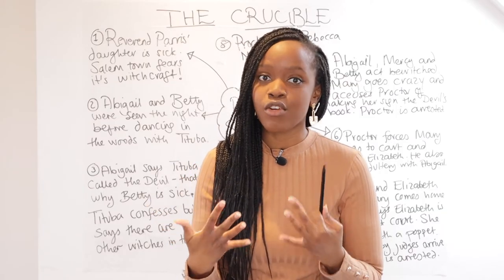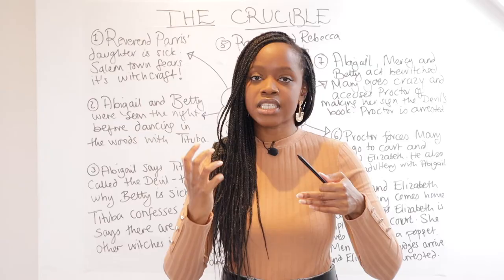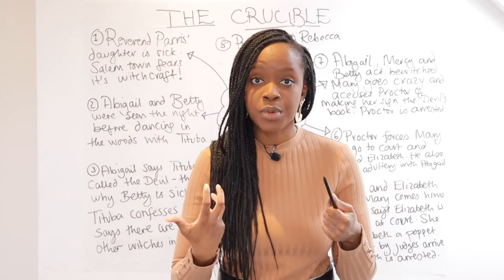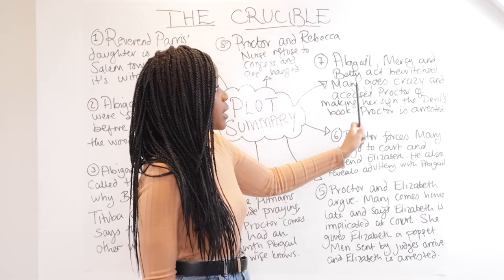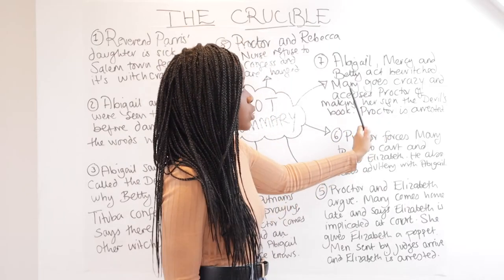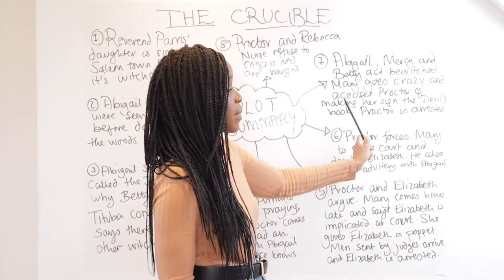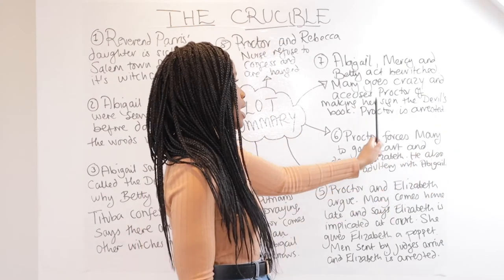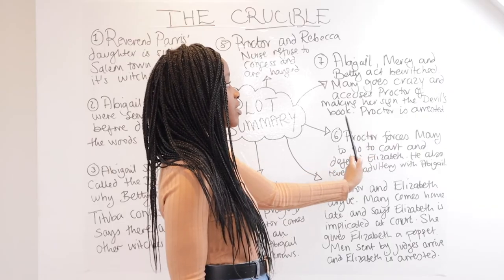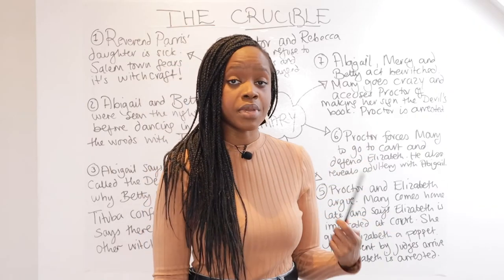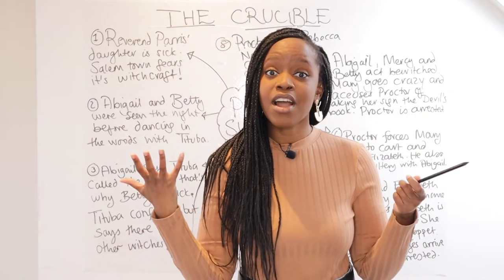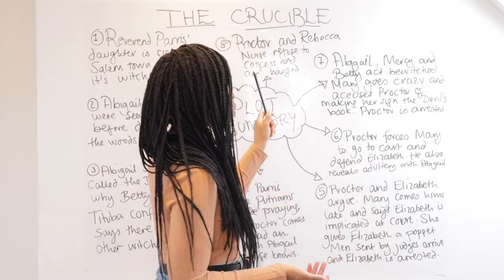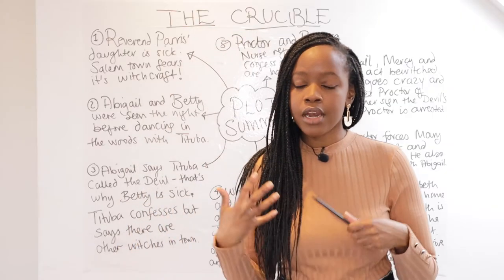Abigail's acting bewitched causes Mary to panic in front of the judges, and Mary ultimately accuses Proctor of making her sign the devil's book. This is exactly what Mary had feared — that Abigail's power to hypnotize those around her would discredit her. Proctor's fate is sealed even further; he is also arrested for involvement in witchcraft and sorcery.